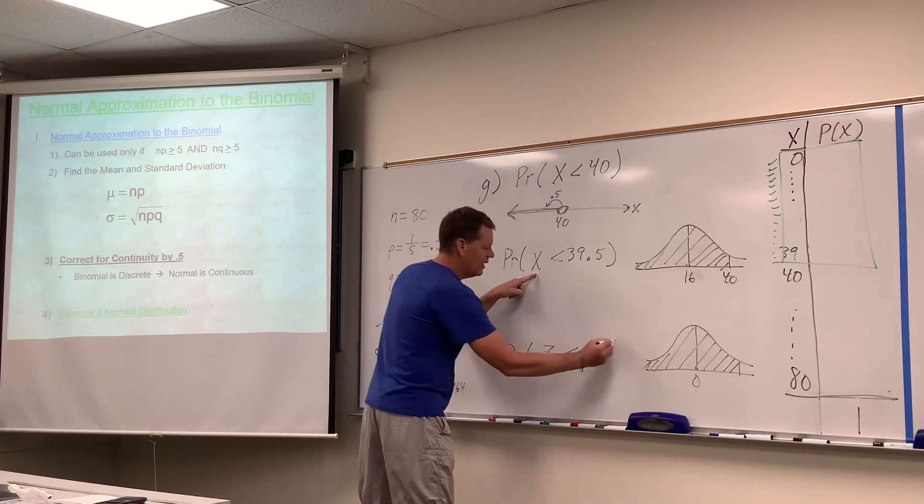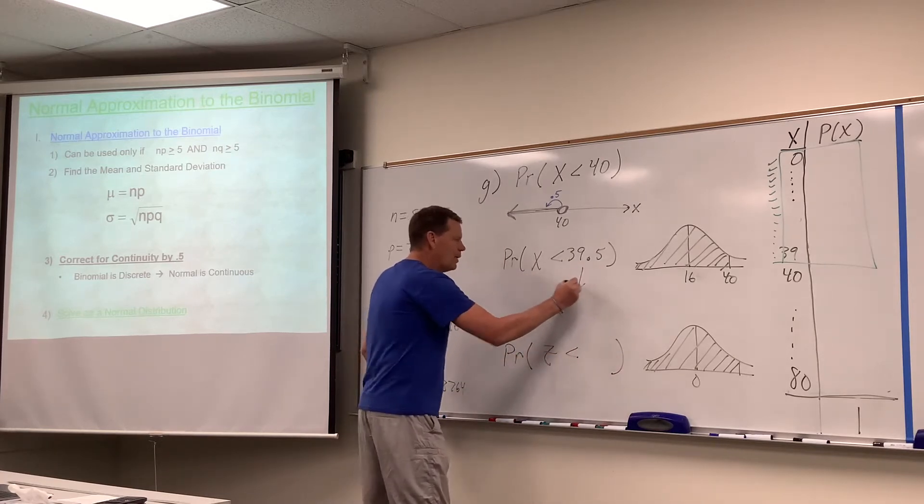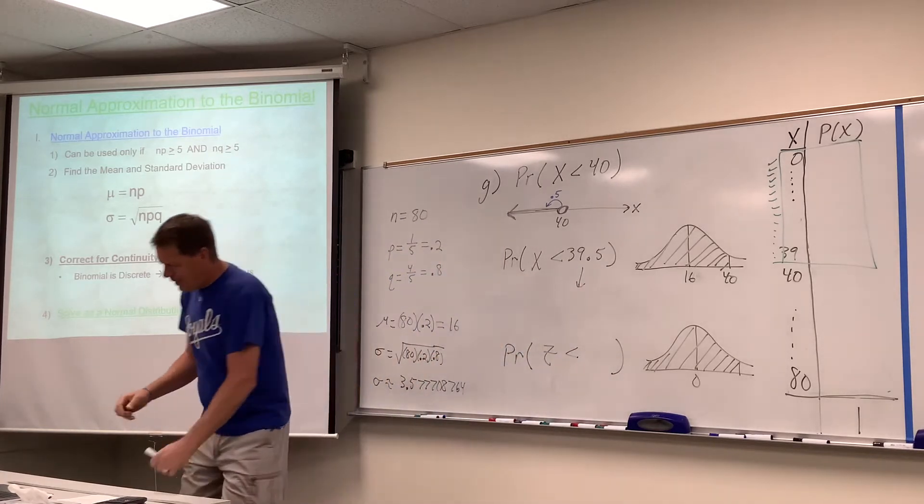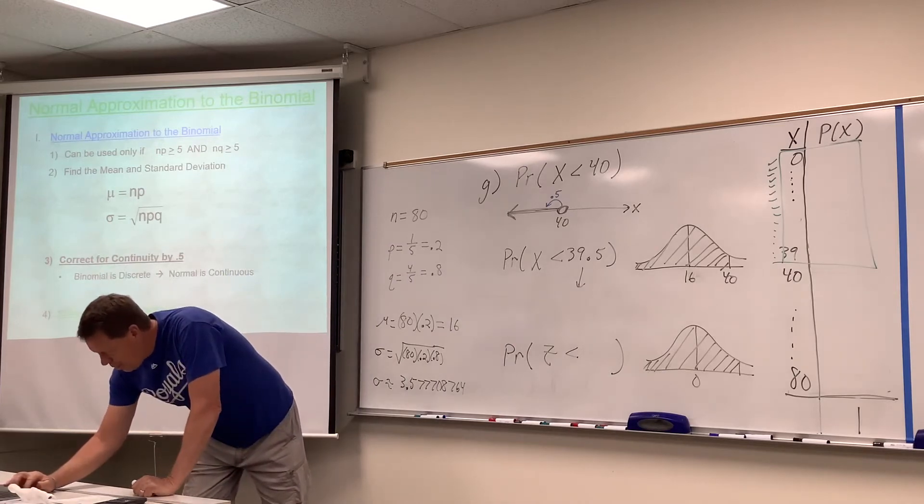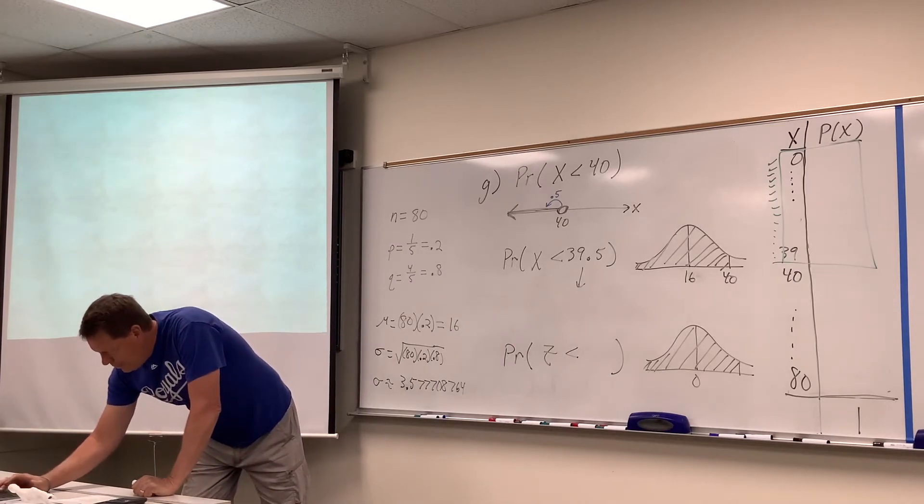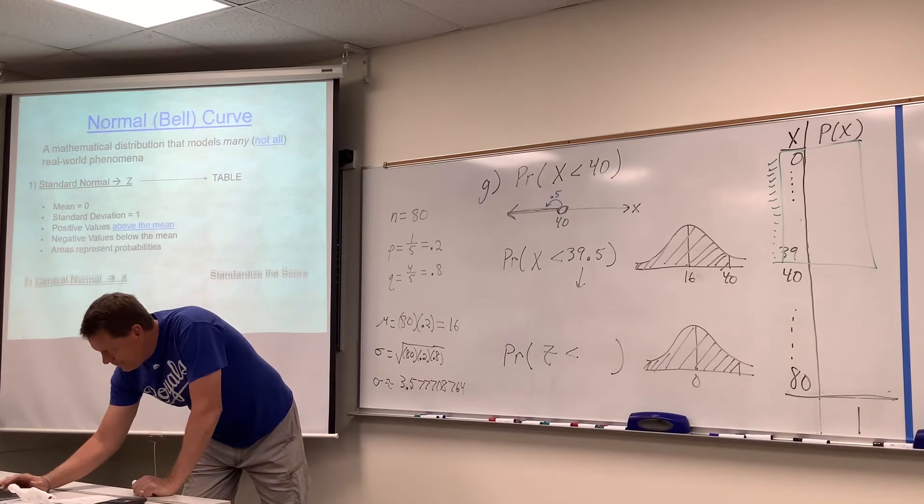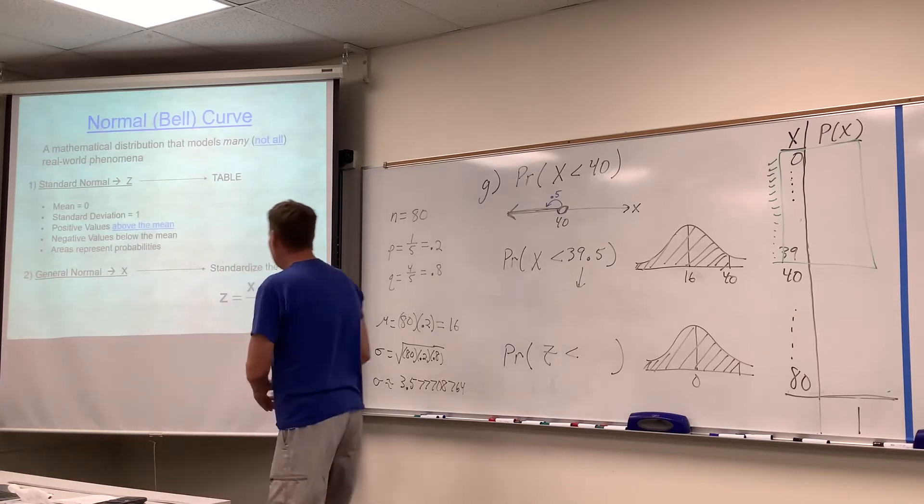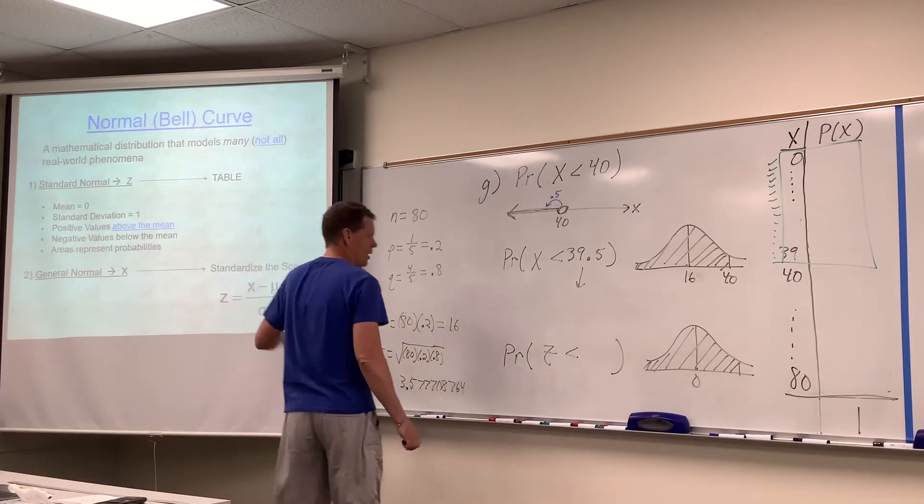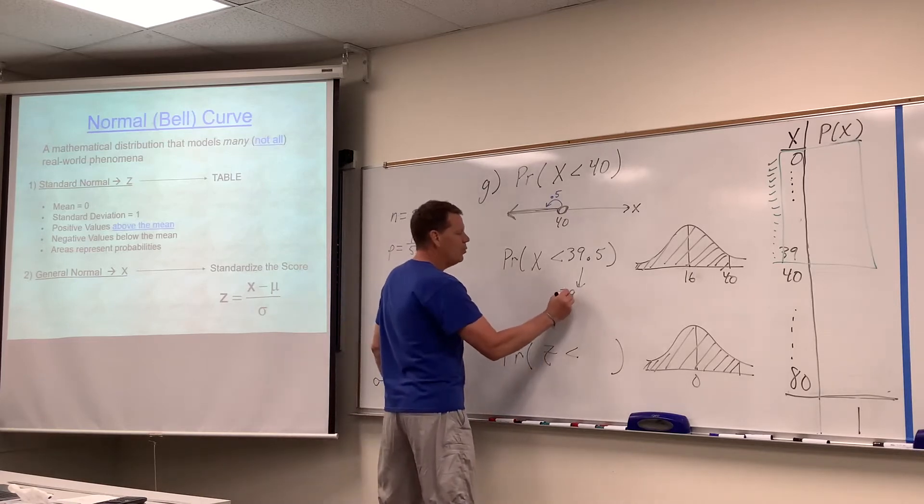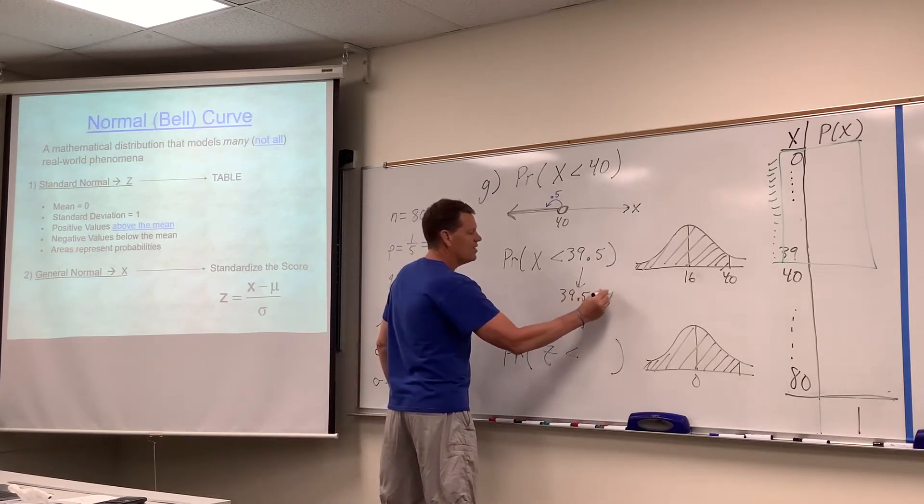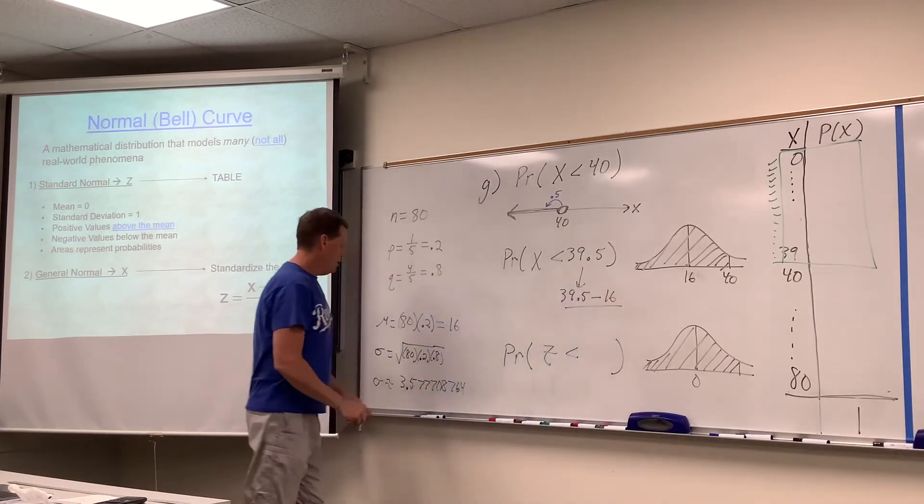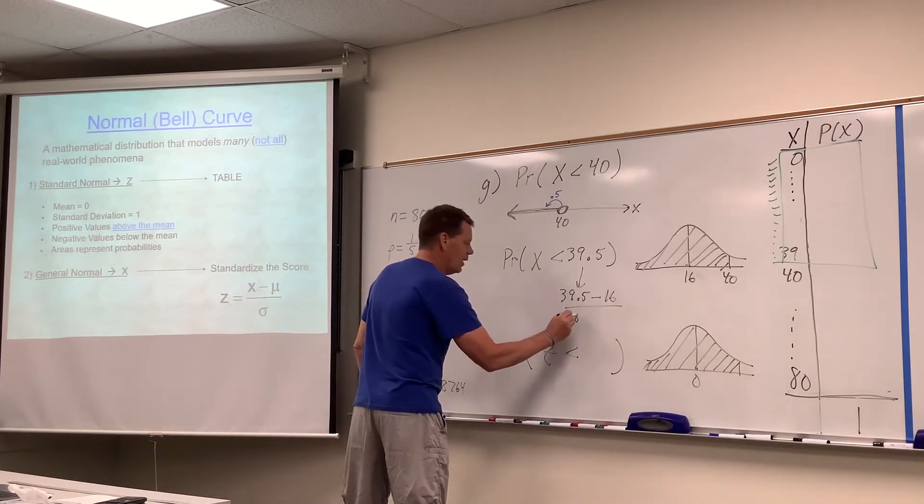Solve as normal. Here's the point: Z equals x minus mu over sigma. That's 39.5 minus 16 over 3.577 and so on. Some of you might know where this is headed.